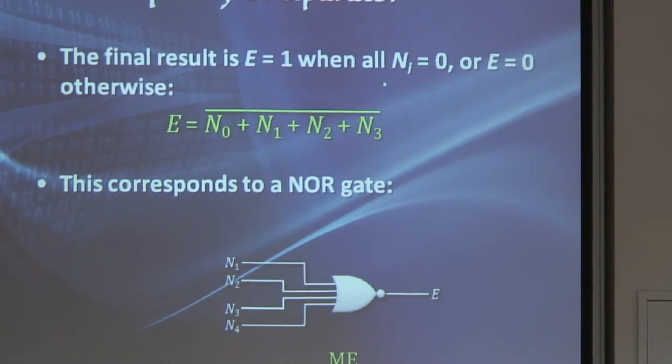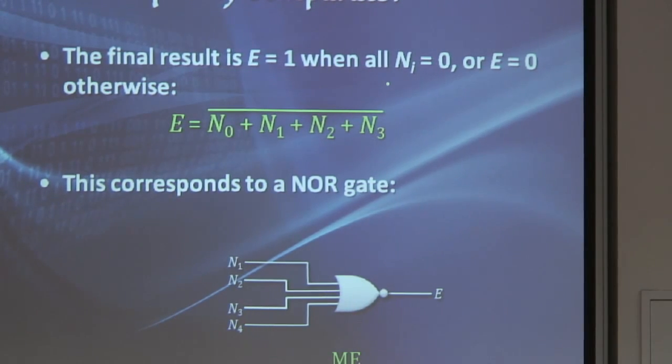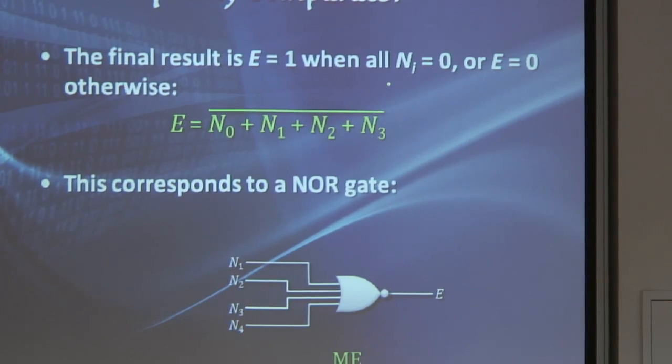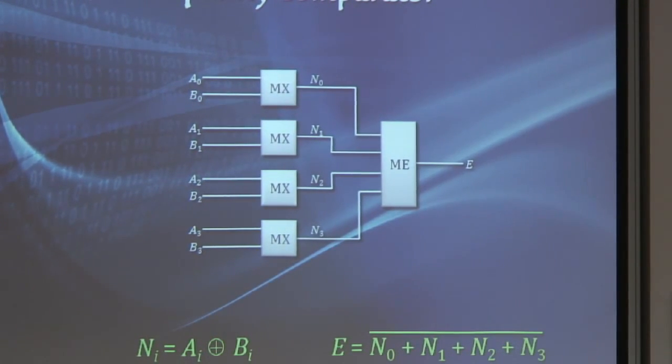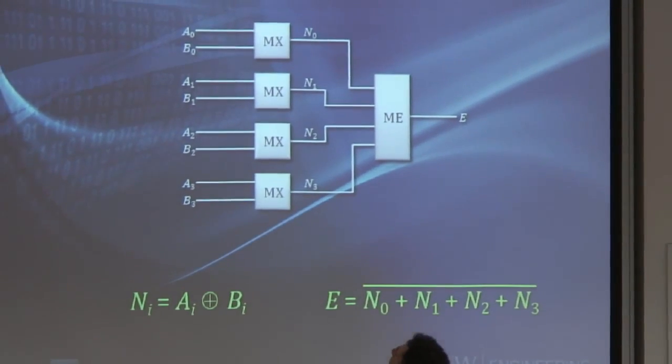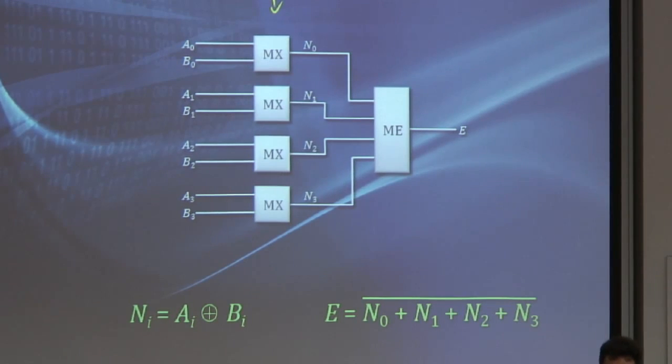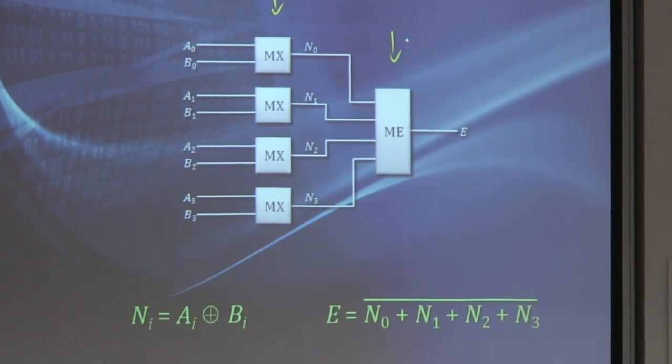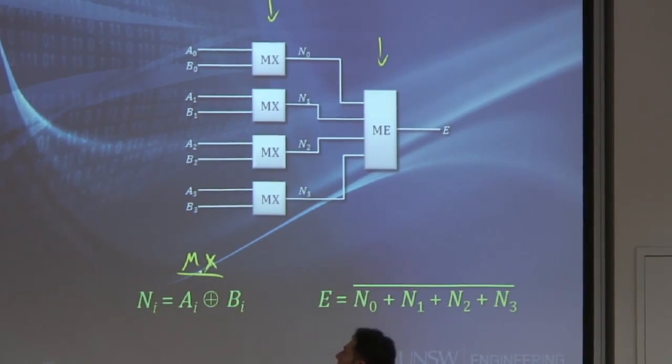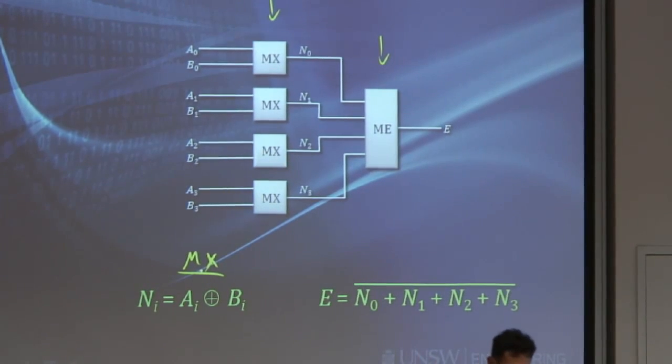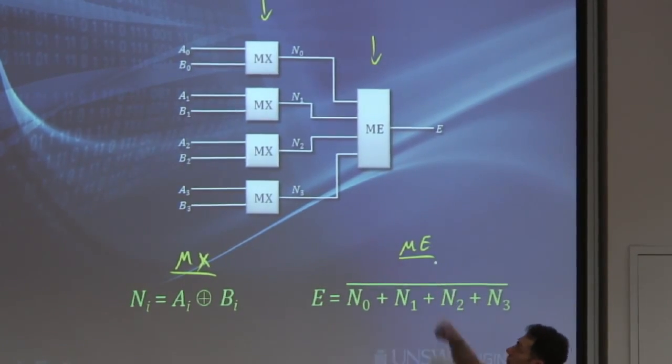Again, this is not the only way to do it. You can actually implement using an AND gate if, in the previous stage, you output a 1 if they match. This is one way of implementing it. Now, putting it all together, we're going back to our comparator there. This is the block diagram that I'll show you just before, where each one of them will compare the single individual bit, and then they all go through this comparator here. The MX blocks, why MX? I don't know. That's what it's called. We'll implement the function A XOR B for each one of these. And then, the ME block will be just a NOR gate. It will take all the inputs and output in the result there.